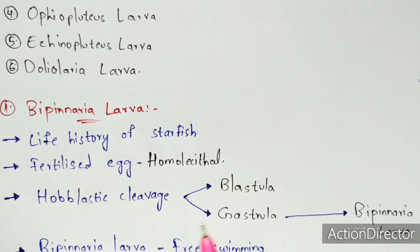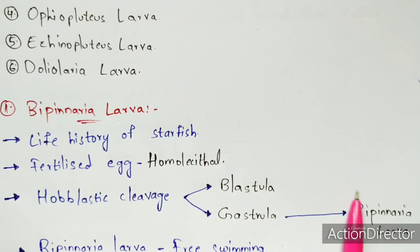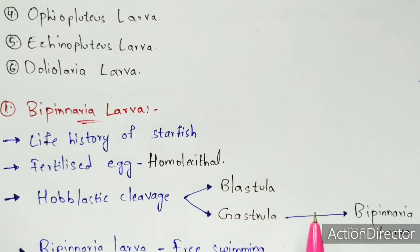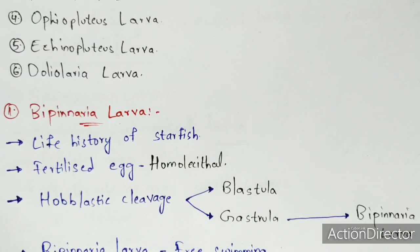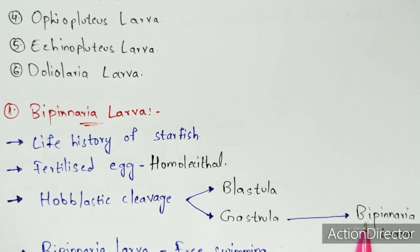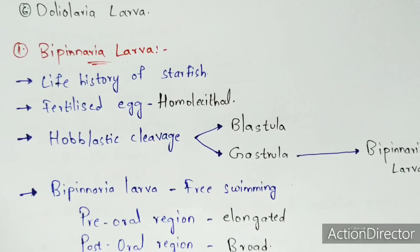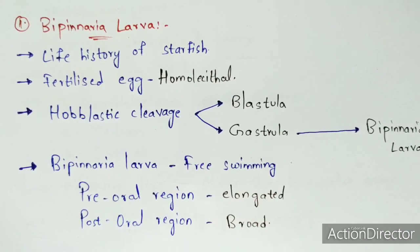The gastrula larva undergoes further development, increasing in length, and finally forms the bipinnaria larva. The gastrula larva is an intermediate stage before bipinnaria; it is not counted as a separate named larva because arms have not yet formed. From the gastrula, the bipinnaria larva emerges through the holoblastic cleavage development process.